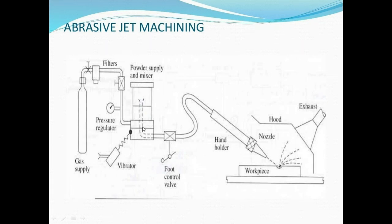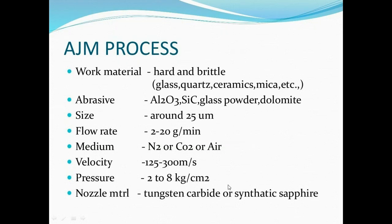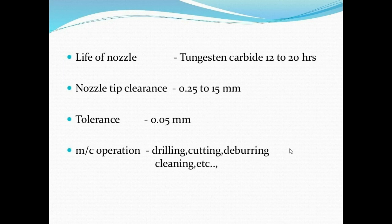For abrasive jet machining, the process parameters and specifications are: work material — hard or brittle materials such as glass, quartz, ceramics, mica; abrasive particles — aluminum oxide, silicon carbide, glass powder, size around 25 microns; flow rate — 2 to 20 grams per minute; medium — nitrogen, carbon dioxide, air; velocity — 150 to 300 m/s; pressure — 2 to 8 kg/cm²; nozzle material — tungsten carbide or synthetic sapphire; nozzle clearance — 0.25 to 15mm; tolerance — 0.05mm; machining operations — drilling, cutting, deburring, and cleaning.